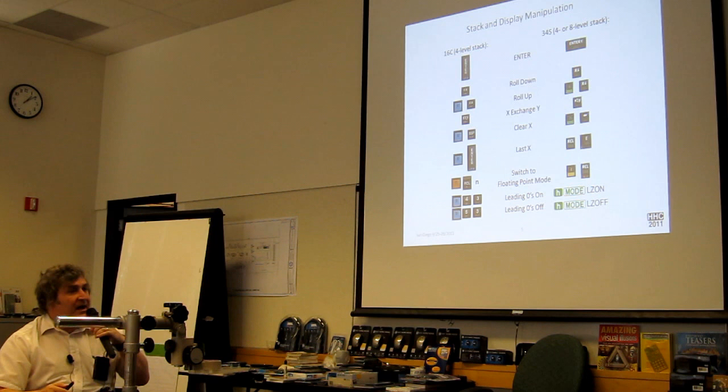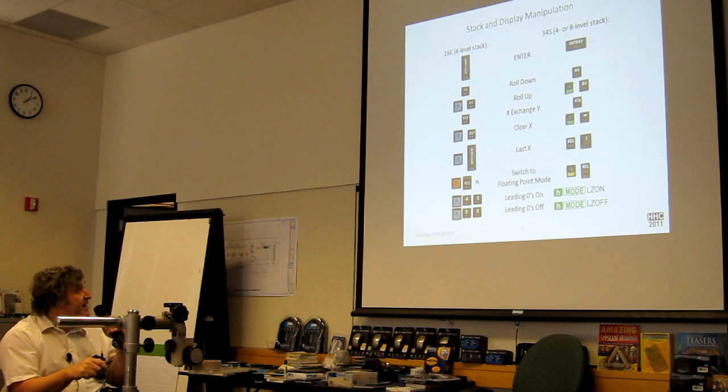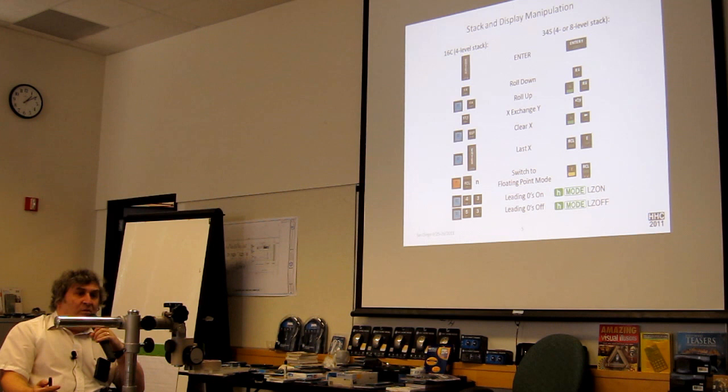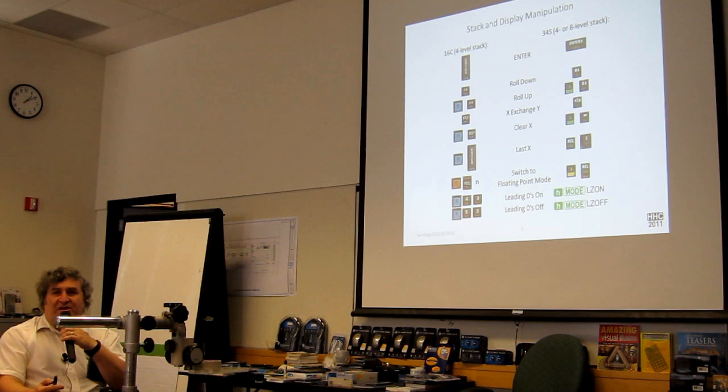In the 34S, again, you've got your stack. It's more like a 41. There's a 31-byte alpha register. You've got a four-level stack or an eight-level stack. And you could use the mode function size four or size eight to give you those things. And their letters are X, Y, Z, T, A, B, C, D. And you've got an L and an I register for last X. And besides that and the register 0 to 99 general purpose and those, there's a J and a K along with 104 flags and 506 program steps. And if that wasn't enough for you, there are multiple banks of that program memory. So this thing is quite spacious.